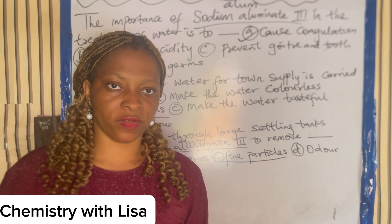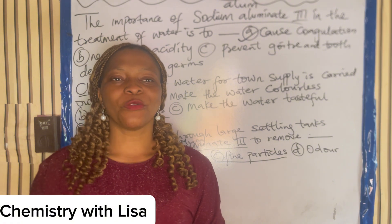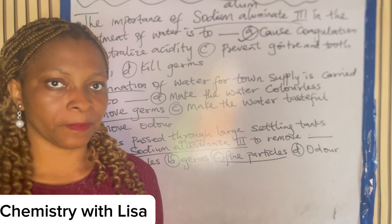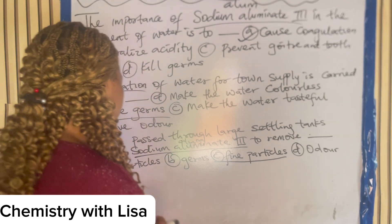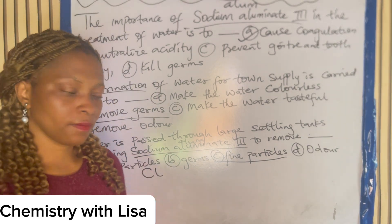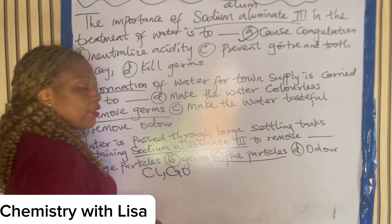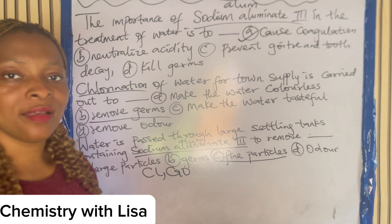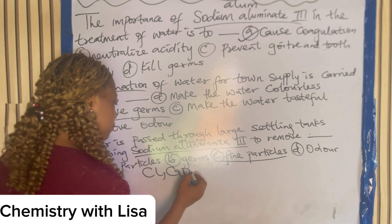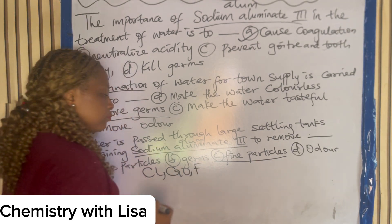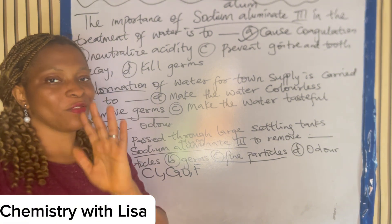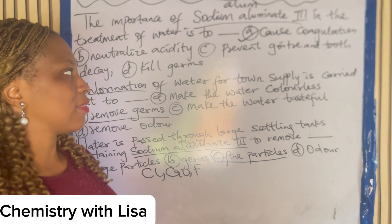Now I would like us to note the following when it comes to treatment of water. Number one: chlorine is used to kill germs. Number two: calcium oxide is used to neutralize acidity. Number three: fluorine is added to prevent tooth decay. Please note these — they are very important.